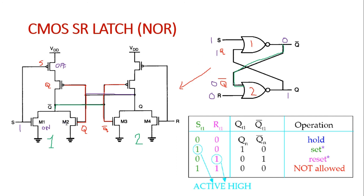Since both PMOS transistors are open-circuited, there is no path to VDD, and the output is driven by the NMOS pull-down network. Therefore the output of the first NOR gate becomes 0, which means Q bar is 0. That 0 is given to the input of the second NOR gate.